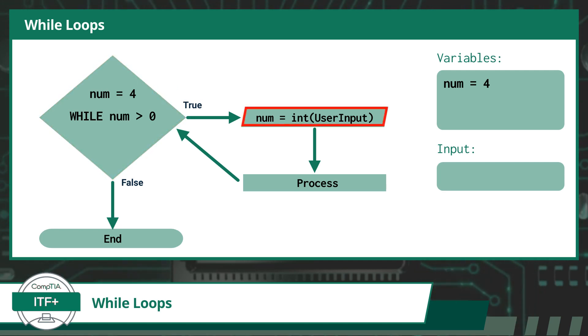Next, we will receive an integer from a user that will be assigned to the num variable and replace our current value. Here we will assume the value 2 was provided as an input. Here our program will perform some type of process, and then we will return back to the condition check of the while loop. At this point, we have completed the while loop once.